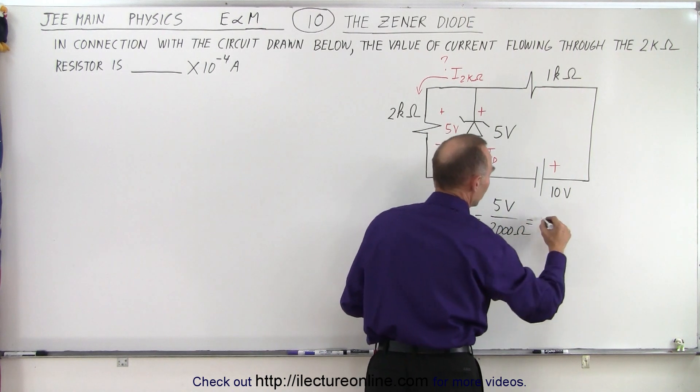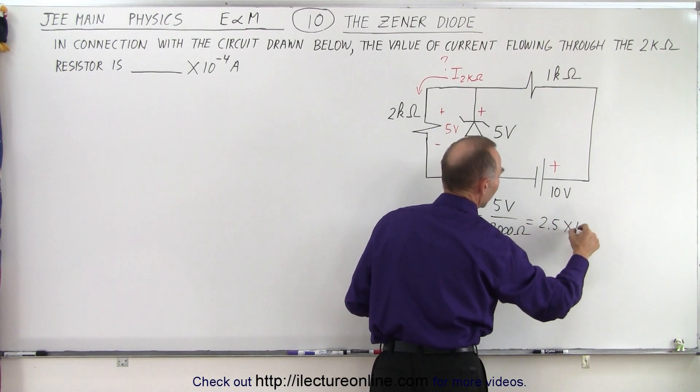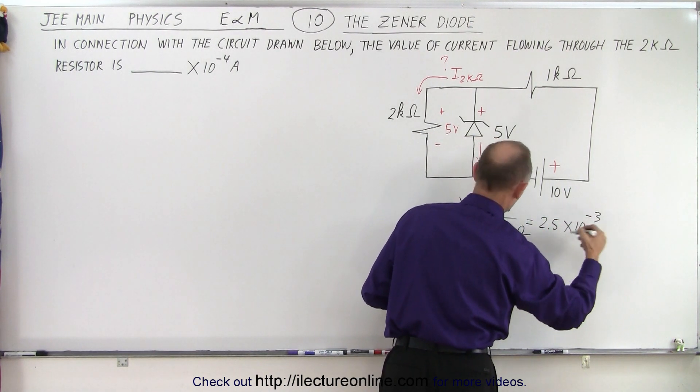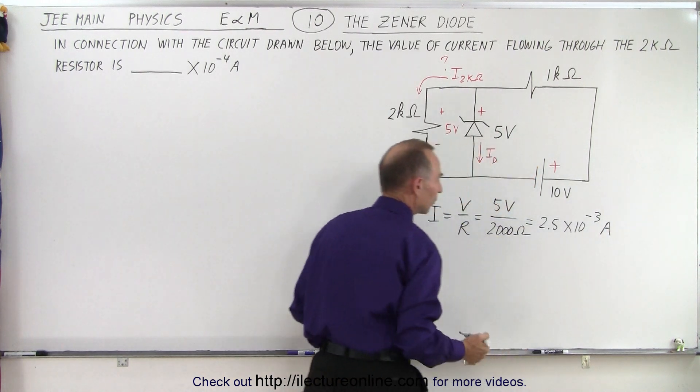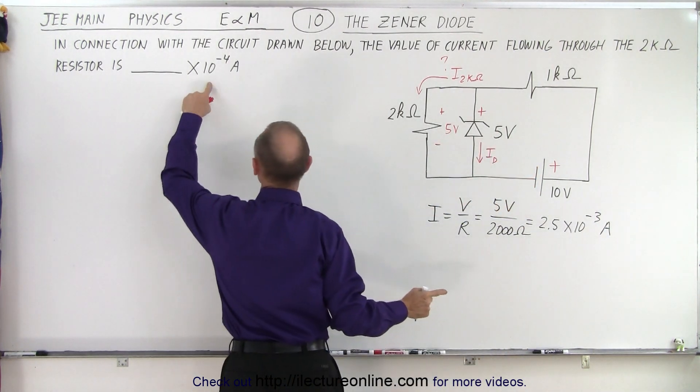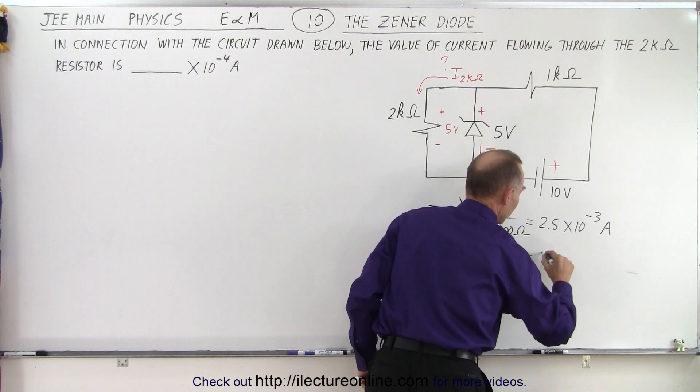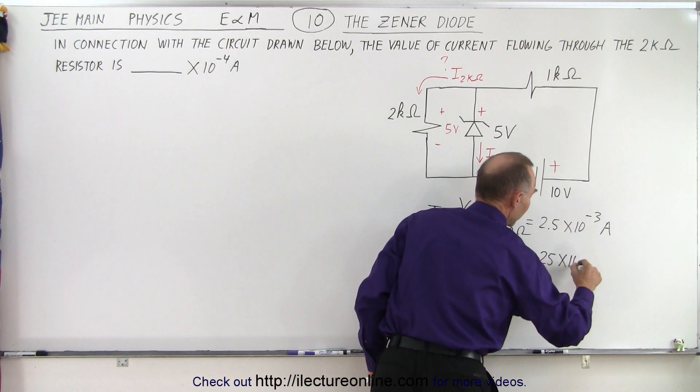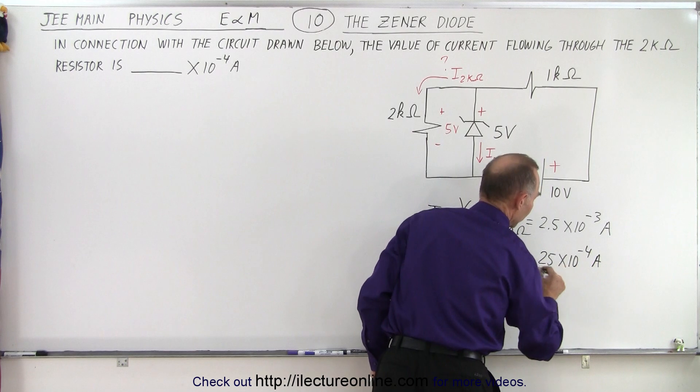So that will be equal to 5 divided by 2, which is 2.5 times 10 to the minus 3 amps, because we're looking for the current. Notice that we have 10 to the minus 4 in the answer choices and 10 to the minus 3 in our result, so this would be 25 times 10 to the minus 4 amps. What we're looking for is the number 25.